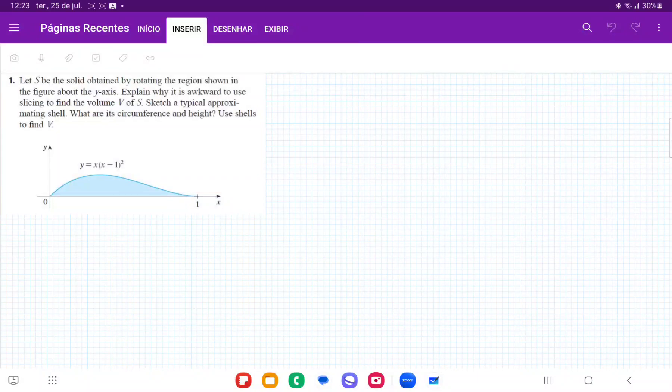So for number one, they want us to take this area beneath the blue curve and then rotate it about the y-axis.